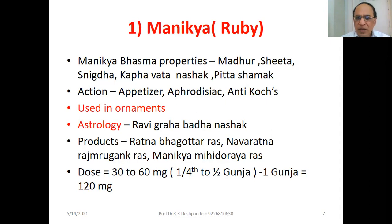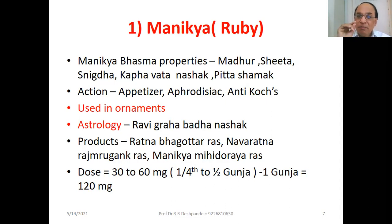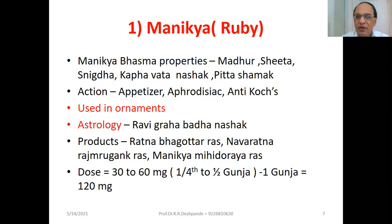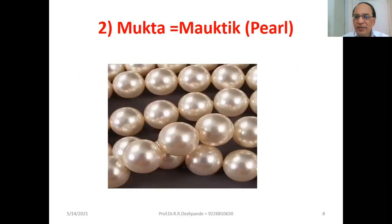All Ratnas are used in a very small quantity — 30 to 60 milligram. As per Ayurvedic science, the measurement unit is Gunja. One Gunja is equal to 120 milligram. Manikya dose is one-fourth to one-half Gunja. Mukta, that is Mautika Pearl — this is commonly used.